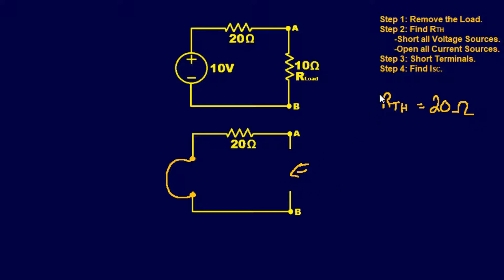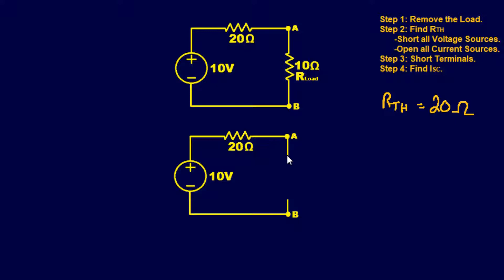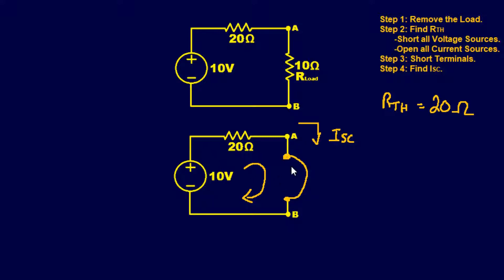Step three: short the terminals between points A and B. It's implied that before doing this you restore the circuit back to its normal form. Now with the short placed between A and B, we need to find the current flowing through those two points. Unlike Thevenin's theorem, we're not looking for voltage — we're looking for current. This circuit doesn't require major analysis; we can use simple Ohm's law: V over R equals 10 volts divided by 20 ohms, which equals 0.5 amps.